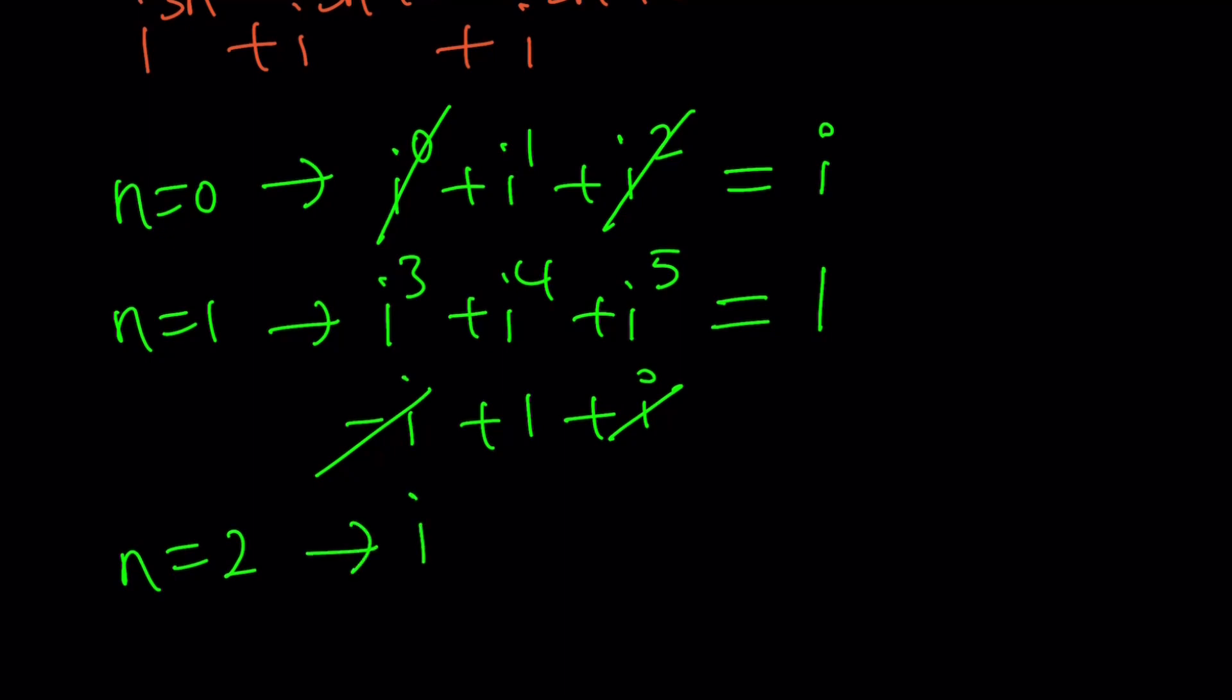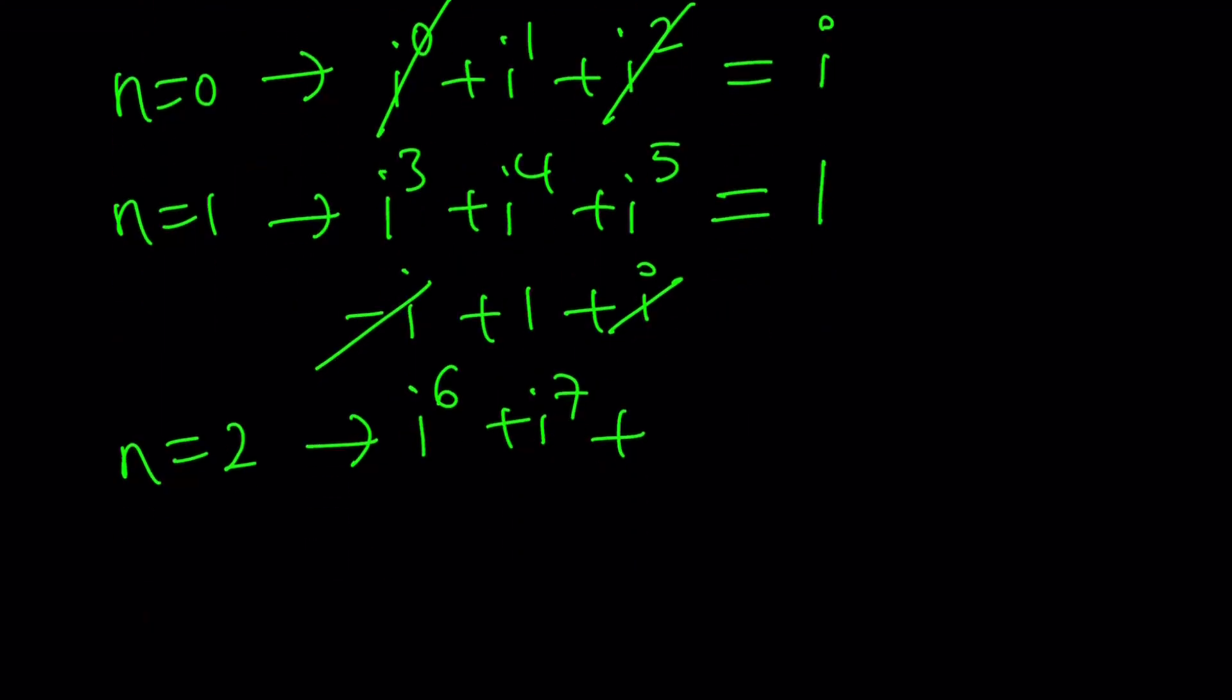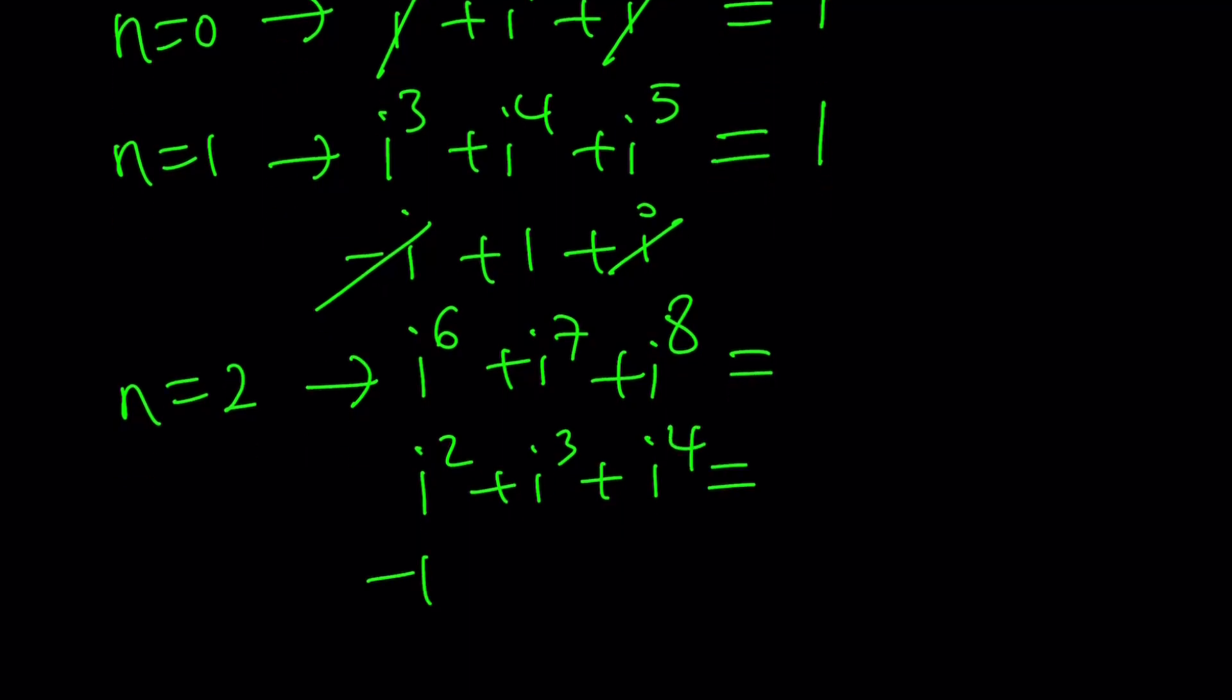And then if N is equal to 2, we would get i to the power 6 plus i to the power 7 plus, wait a minute, am I doing it right? Yeah, I think so. i to the 8, because those are multiples of 3. And then i to the 6 is going to be the same as i squared. Notice that we're throwing away the 4th, or multiples of 4. This is going to be i squared, this is going to be i cubed, and this is going to be i to the 4th, or just 1.